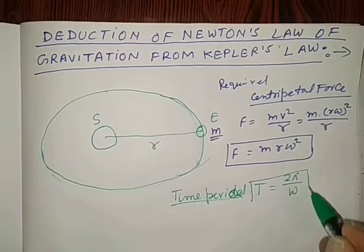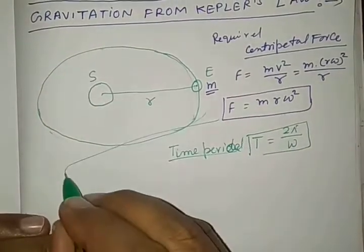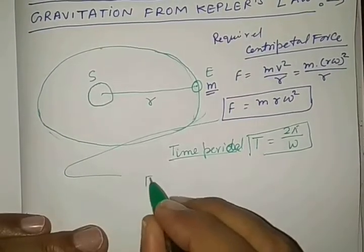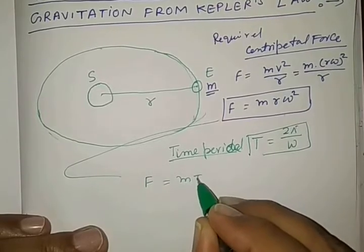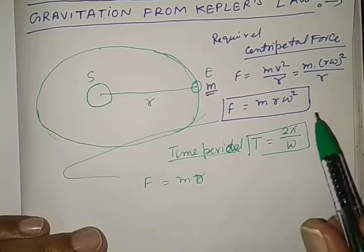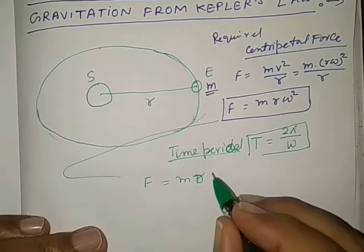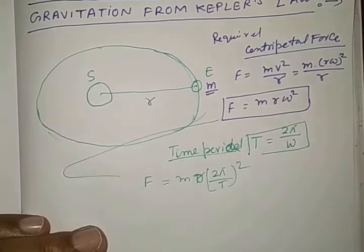Putting this concept in above equation, we may write centripetal force as F is equal to m r. Here in place of omega square, we may write 2 pi by T whole square.